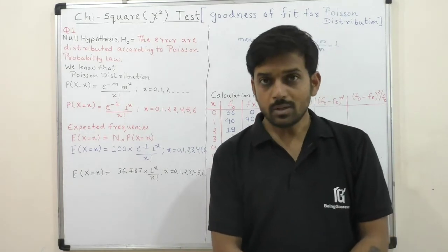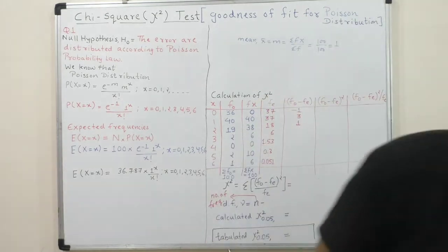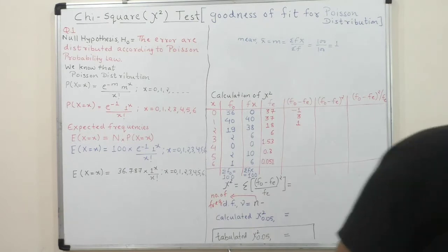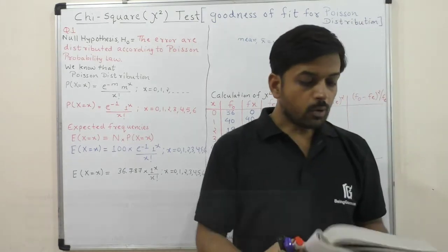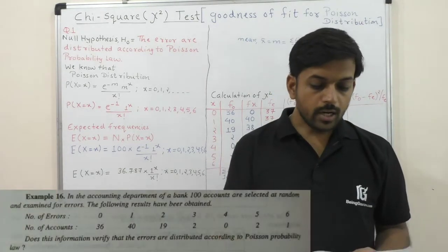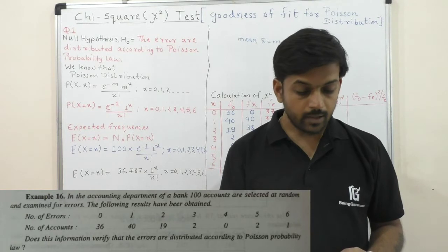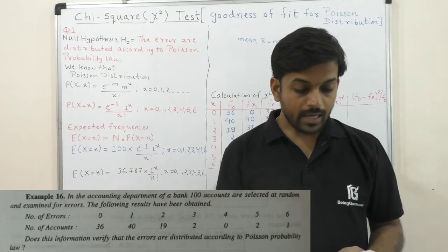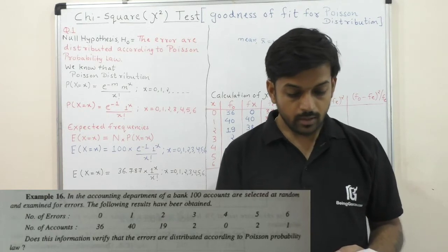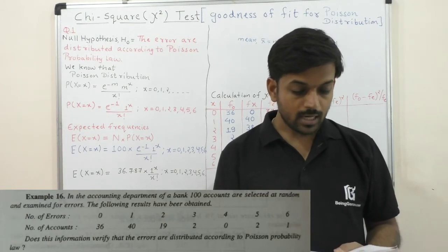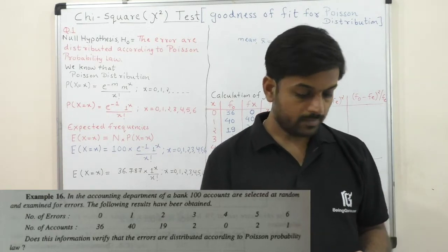Let's understand the question. In the accounting department of a bank, 100 accounts are selected at random and examined for error. The following results were obtained.